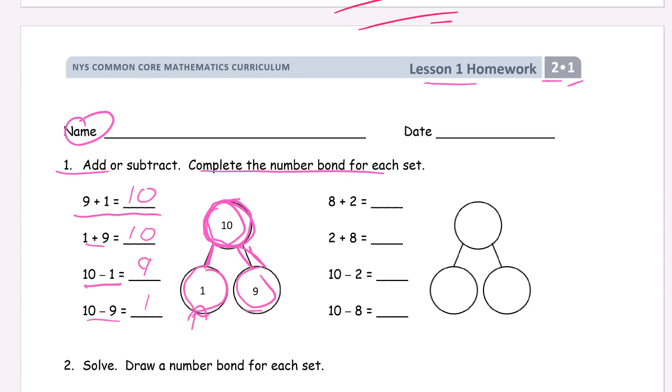Now we've got the second number bond. We have a different fact family to look at. We have to fill in the numbers for this number bond, but we can see right here what the add-ins are. It's eight and two, so the eight and the two go here. This is going to be the total of eight and two.